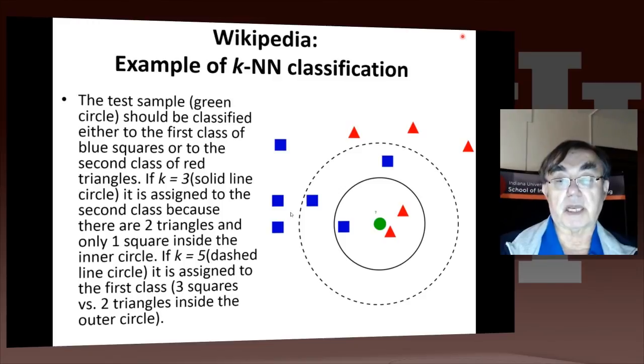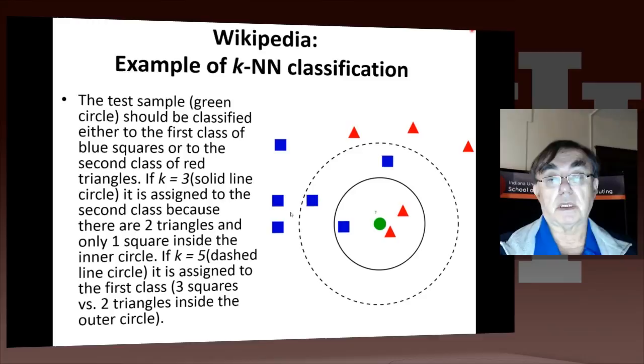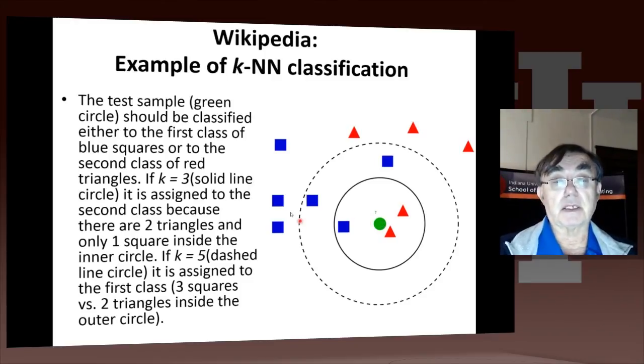If I take k of 3, which is the points in the solid circle here, those three points, and we might just do a voting algorithm, notice of those three points, two of them are red and one is blue, so we will classify the green point as red, which is probably the best classification. On the other hand, if we'd taken k of 5, which is the points inside this dashed circle, we would find three blues and two reds.